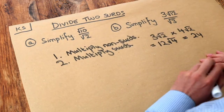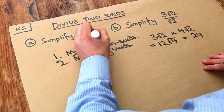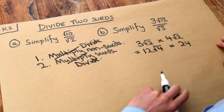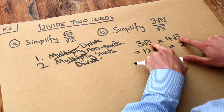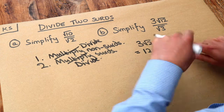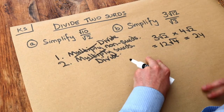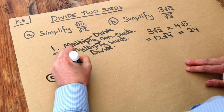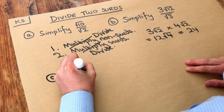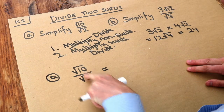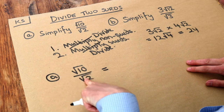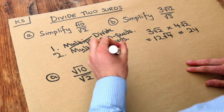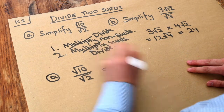Now dividing two surds is exactly the same, so I'm just going to replace the word multiply with divide. Just like when we multiply two surds together we multiply the numbers to get √4, the same is true when we divide surds. So if we want to simplify √10 over √2, because we're dividing two surds we just divide the numbers, so we get √(10÷2) which is √5.